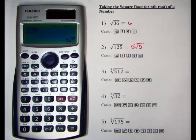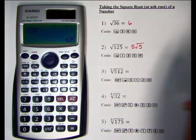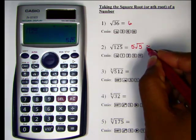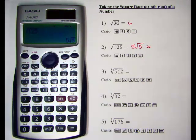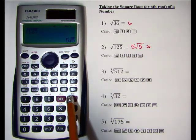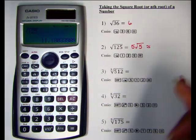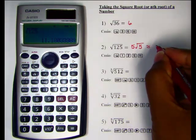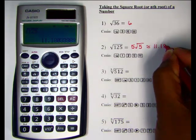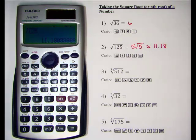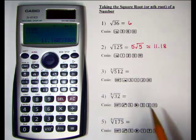That number represents the exact square root of 125. If you would like the decimal approximation — say for a word problem — you would hit your SD key to convert from standard to decimal. We see the decimal approximation is approximately 11.18, rounded to the hundredths place.